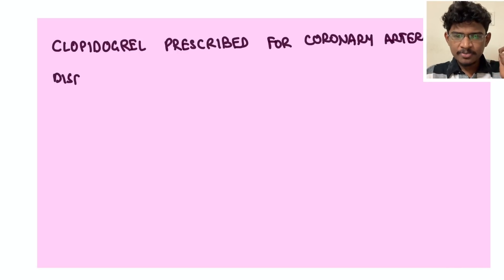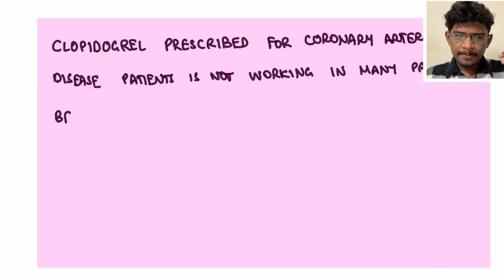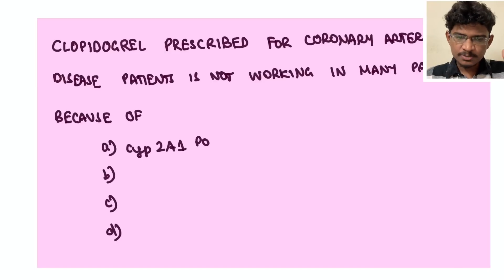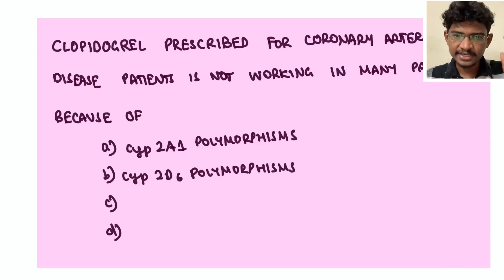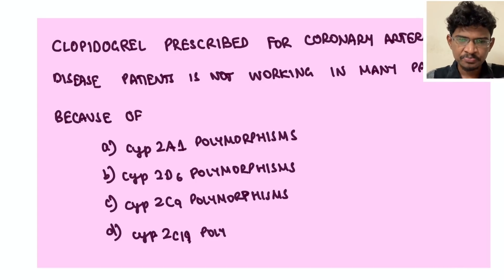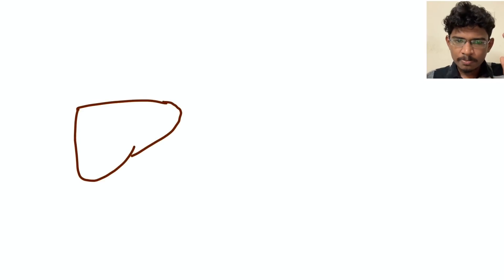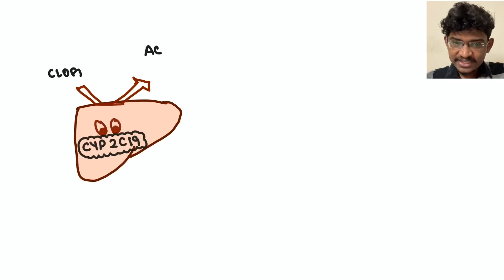Clopidogrel prescribed for coronary artery disease patients is not working in many patients because of: CYP 2A1 polymorphisms, CYP 2D6 polymorphisms, CYP 2C9, or CYP 2C19 polymorphisms? Many might know but still we will see a detailed discussion.